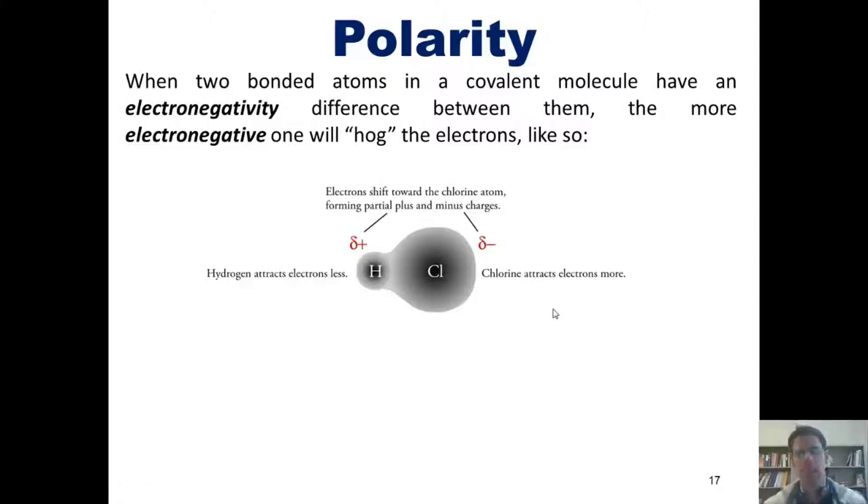Thus, when they form a bond, it is a shared electron bond or a covalent bond. However, because the chlorine is much more electronegative than the hydrogen, it hogs the electrons more to itself, creating a partial negative charge on the chlorine atom and a partial positive charge on the hydrogen atom.